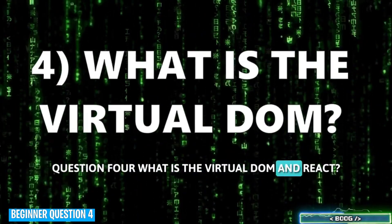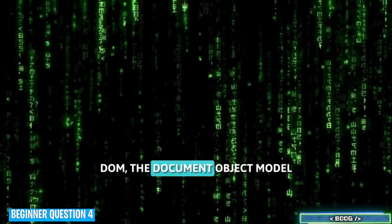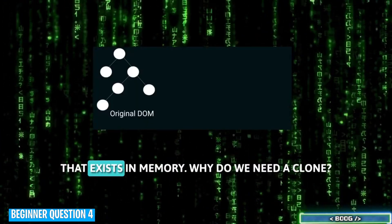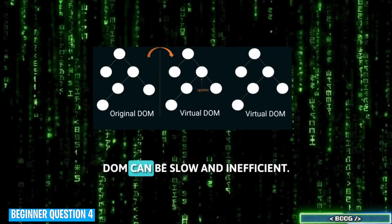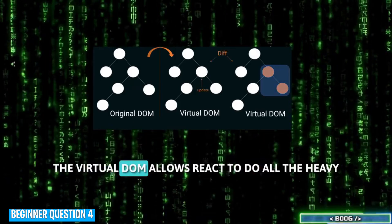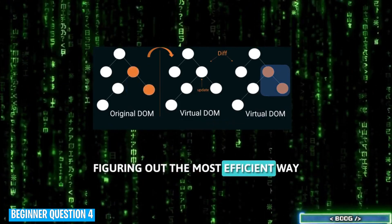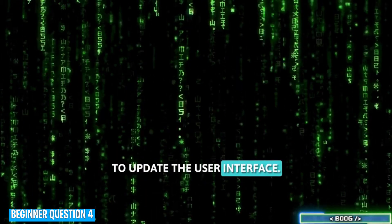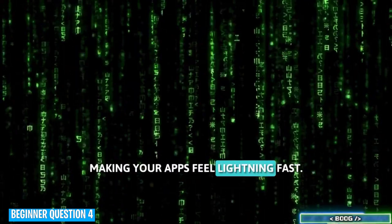Question 4. What is the virtual DOM in React? The virtual DOM is essentially a lightweight clone of the real DOM, the document object model, that exists in memory. Why do we need a clone? Well, interacting directly with the real DOM can be slow and inefficient. The virtual DOM allows React to do all the heavy lifting behind the scenes, figuring out the most efficient way to update the user interface. This leads to smoother and faster performance, making your apps feel lightning fast.